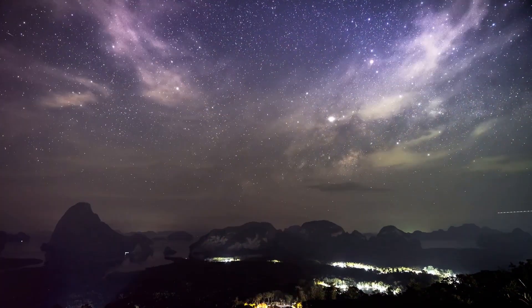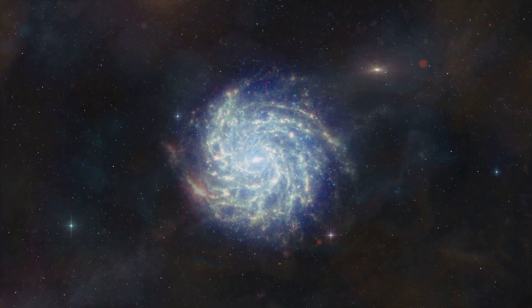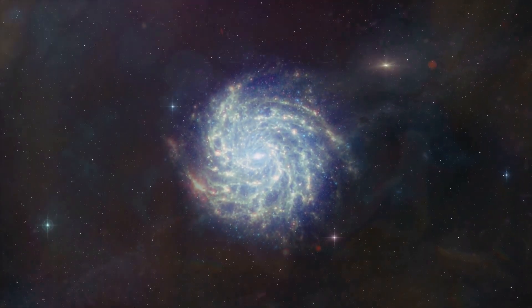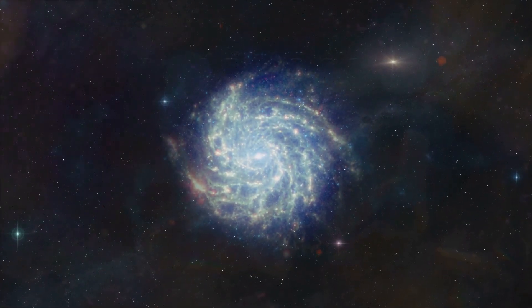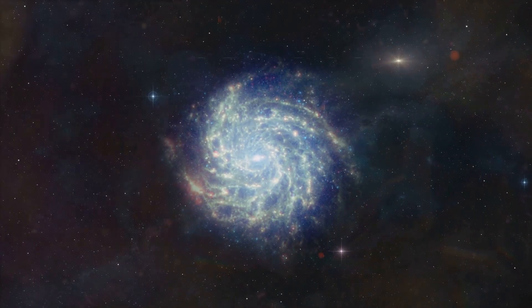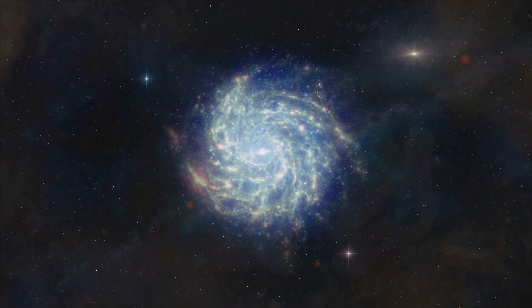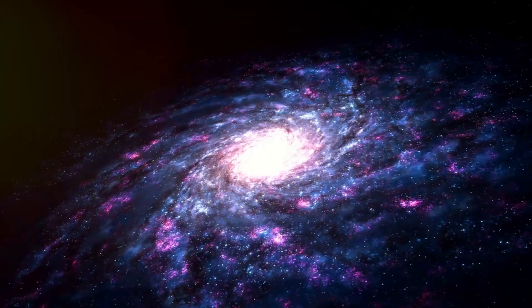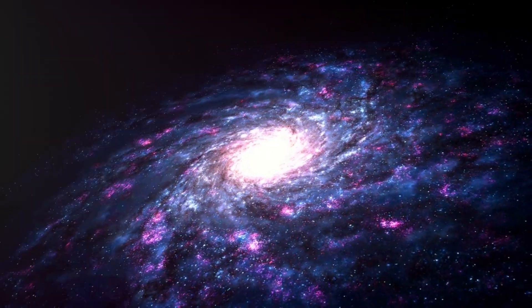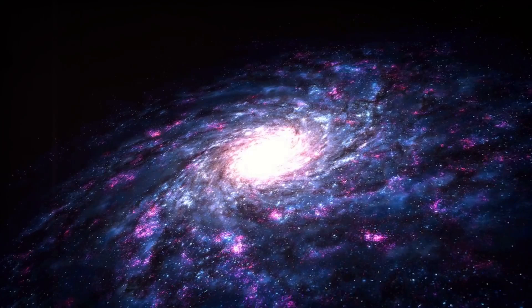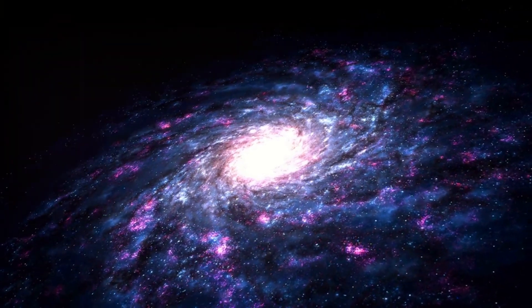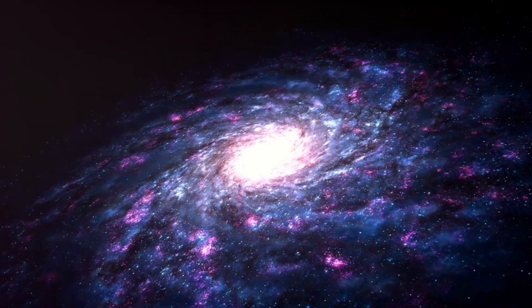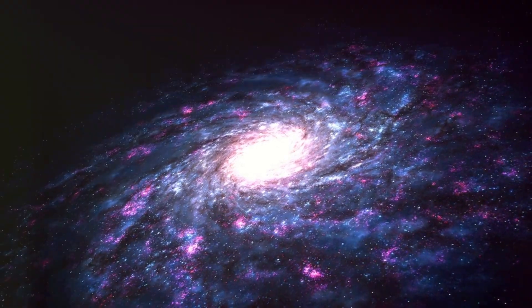Our Milky Way galaxy is a vast and beautiful place. It is a swirling disk of stars, gas and dust, home to billions of stars and planets. The Milky Way is a barred spiral galaxy, with its central bar of stars and its majestic spiral arms extending outward. Our solar system resides in one of these spiral arms known as the Orion Arm, about 27,000 light-years from the galactic center.